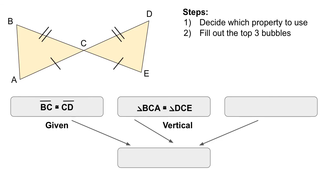Next, we know that our angles are going to be congruent to each other. So we've got some vertical angles. BCA is congruent to DCE.